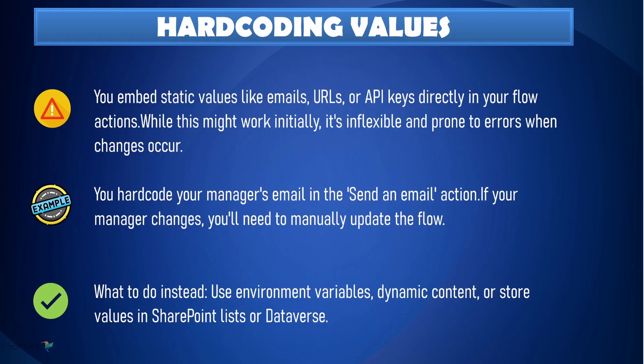First up: stop hard-coding values like emails, URLs, or credentials directly in your flows. Hard-coding makes it difficult to manage when things change. Imagine you hard-code your manager's email in a flow and they leave the company — you will have to go back and update it manually. Instead, use environment variables to store values in places like a SharePoint list or Dataverse. For example, you could store your manager's email in a SharePoint list and retrieve it dynamically whenever needed.